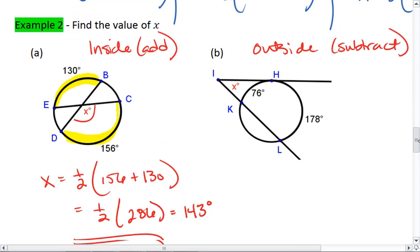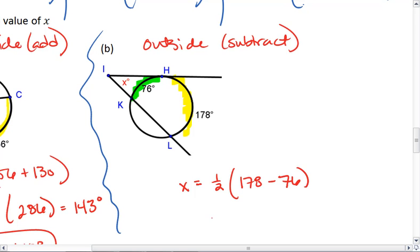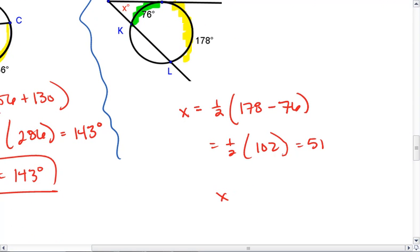Now let's look at the second example. Because we are outside, we're going to subtract. So x is going to equal one-half. We're going to take the larger angle minus the smaller angle. We take 178 minus 76. We get one-half of 102, which is 51. So x here equals 51 degrees.